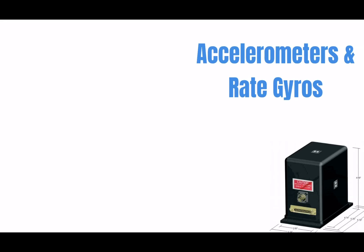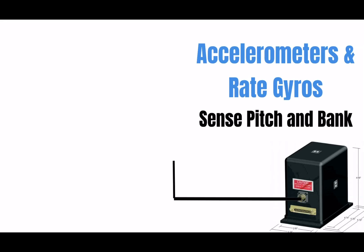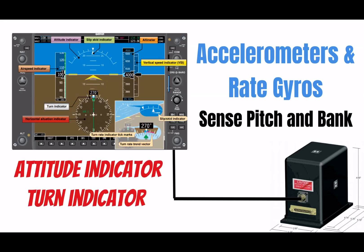These instruments get their information from something called the attitude and heading reference system. This thing is basically a small box with a bunch of sensors inside. A couple of these sensors are called accelerometers and rate gyros. These sense pitch and bank. The AHRS system then takes this data and sends it over to the attitude indicator and the turn indicator. Another type of sensor inside of the AHRS is a magnetometer. These sense the Earth's magnetic field vector to determine the magnetic heading of your airplane.